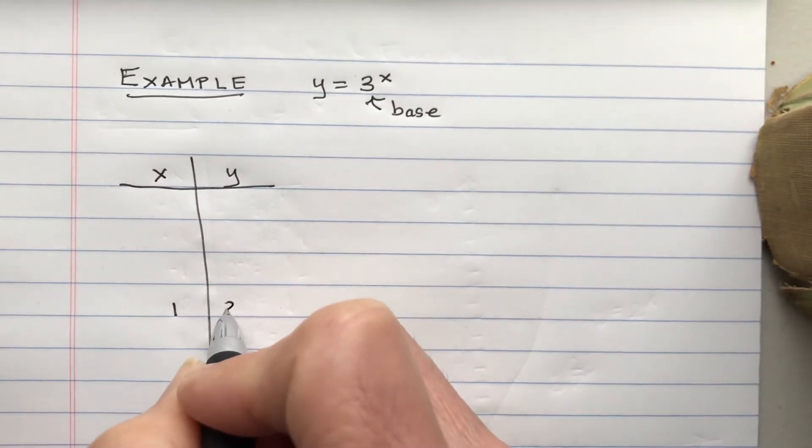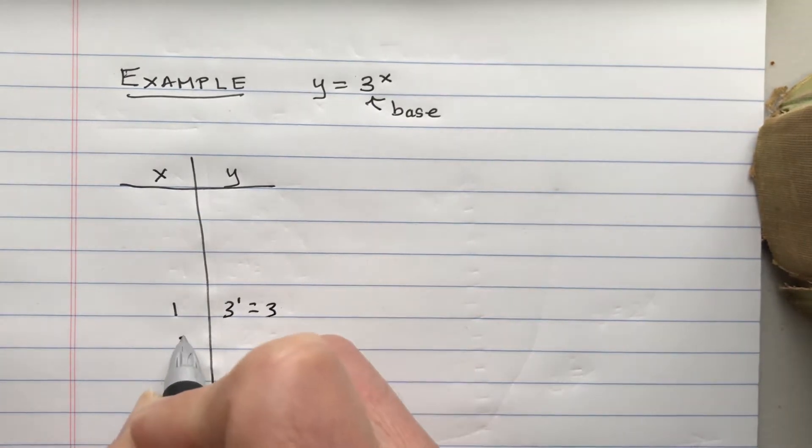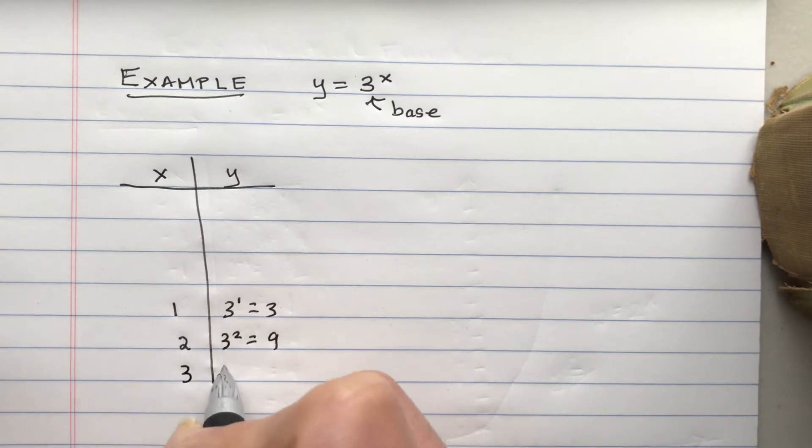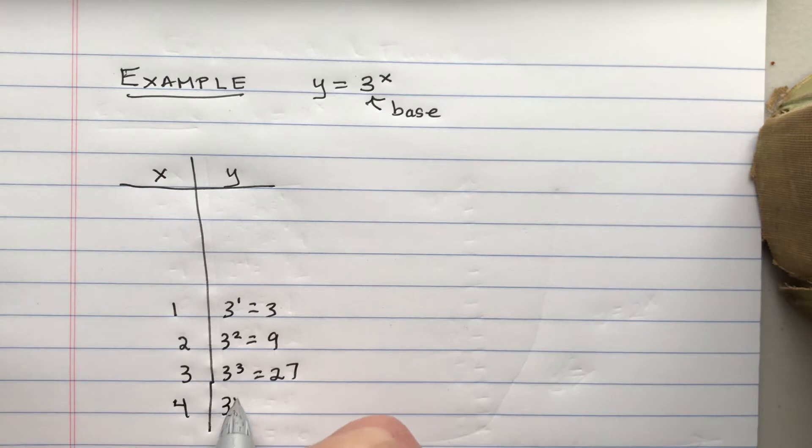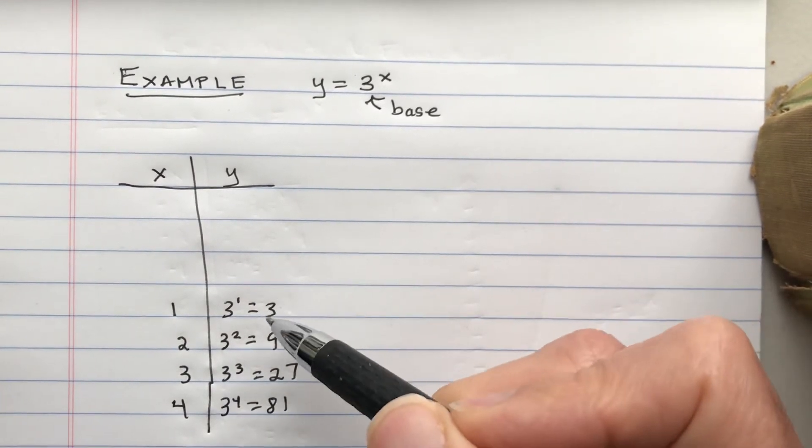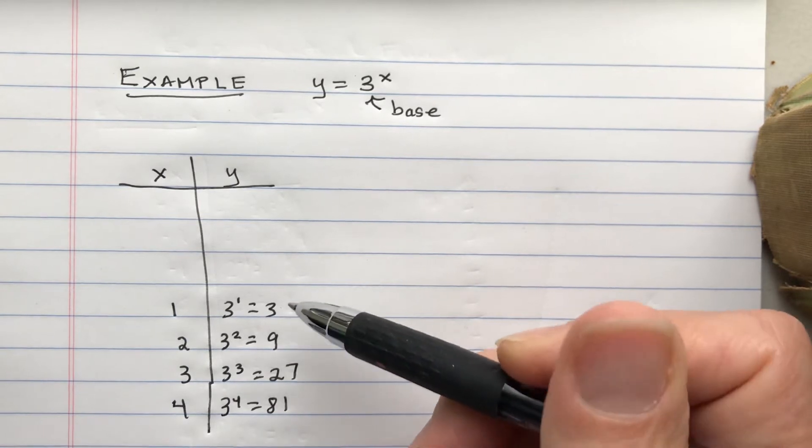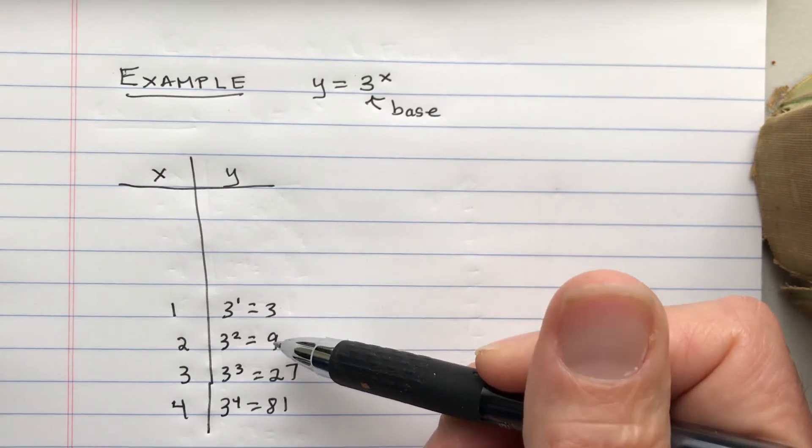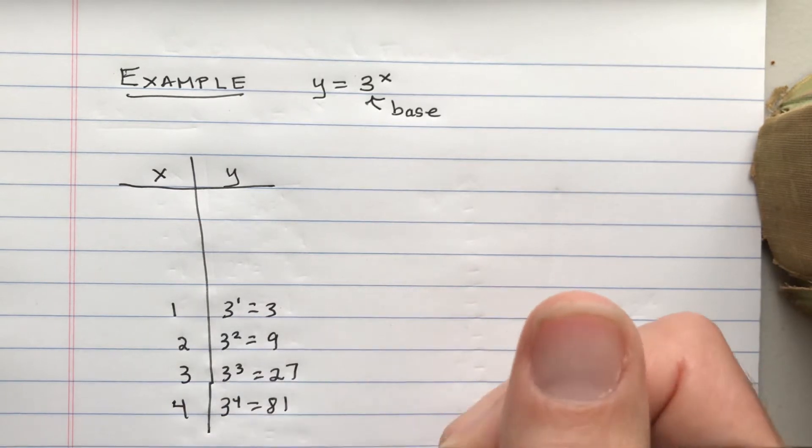So 3 to the 1 power is 3. 3 squared is 9. 3 to the 3rd is 27. 3 to the 4th is 81. So as x increments by 1, this function is multiplied by 3. So it triples every time we increment by 1.